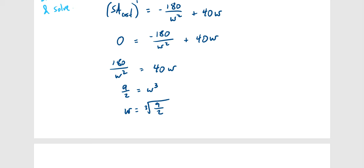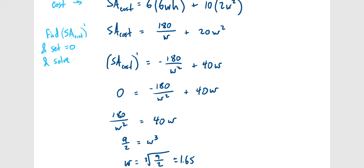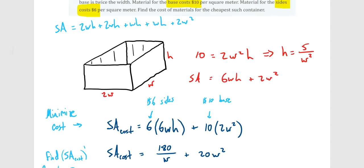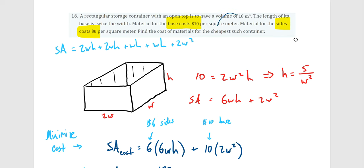Rounding the cube root of 9/2, we get W ≈ 1.65. This value represents the width. Looking back at the problem, the units are in meters, so the width is approximately 1.65 meters. Now we need to verify that this gives the cheapest container, meaning we need to confirm it is a minimum value.